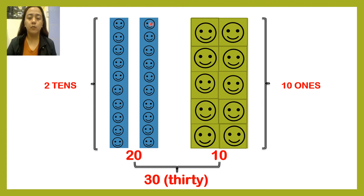Next group: one, two, three, four, five, six, seven, eight, nine, ten. Ten. So we have how many groups? We have one, two. So we have two tens, which is equal to twenty.